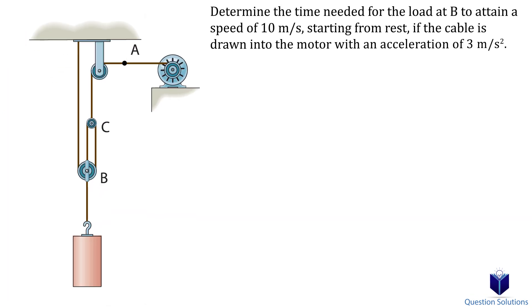Let's take a look at this example. In this example, we have to find the time needed for the load at B to gain a speed of 10 meters per second starting from rest. Looking at the pulley system, we see that the motor pulls the cable to the right and this in turn pulls the load upwards. So we need two datums, one for the horizontal movement and another for the vertical movement. We can place both of those datums at the top pulley, which is fixed to a wall.